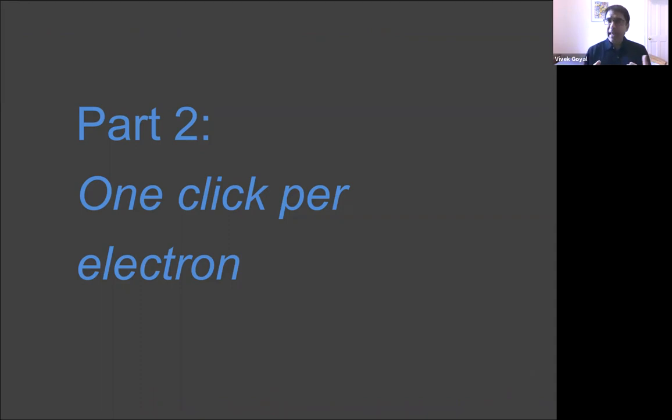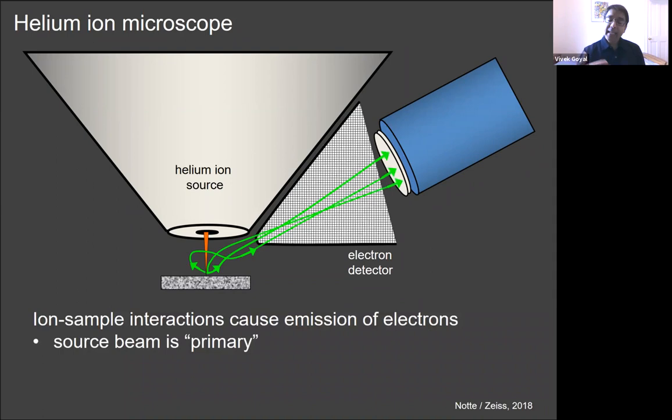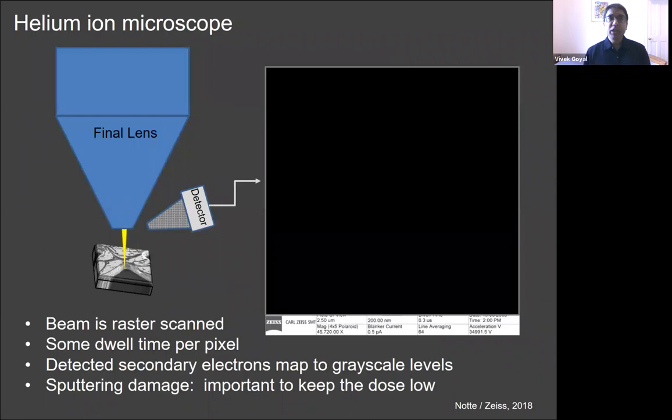So now I'm going to change from problems in which we have one click per photon to instead having one click per electron. This part's shorter, but it reinforces that a particle level view of what's going on in an imaging system can lead to new and valuable methods. I'll specifically describe helium ion microscopy, but all ion beam microscopy can be modeled the same way. A helium ion microscope has a helium ion source and an electron detector. An incident ion causes emissions of electrons. The detected electrons are called secondary electrons because the source beam particles are called primary particles.